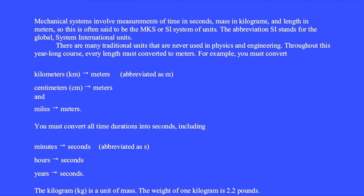The kilogram, abbreviated kg, is the unit of mass. The weight of 1 kg is 2.2 pounds.